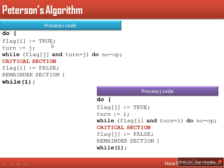So flag[i] is set to true. Now the second thing: this process actually gives another process a chance to execute, so it will set the turn variable to j. It means if there is another process j also running at the same time, this turn variable will be set to j and that process will run first. So the first instruction provides the intention and the second one determines which process will enter its critical section.